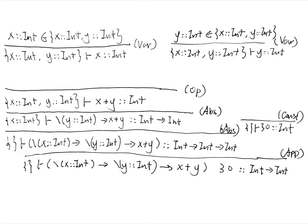We need to deduce that under the extended type environment with x mapping to int, the body has type int→int as the return type. By looking at the shape of the body, it is another lambda abstraction, so we apply the abs rule again and type check the inner body under the extended environment with x:int and y:int. The shape of that expression is an infix operator, so we apply the ops rule to prove both operands have type int. We deduce this by the var rule: x is found in the type environment with type int, and y is also found with type int.